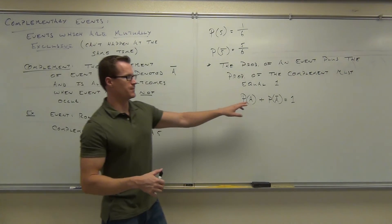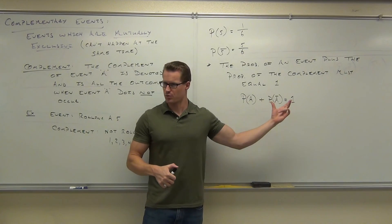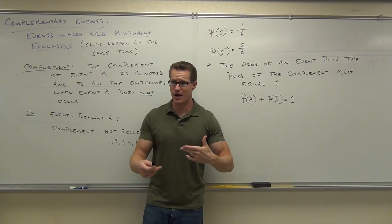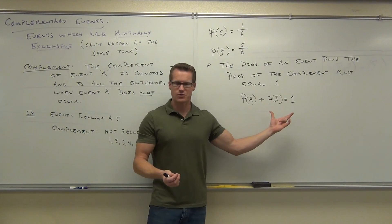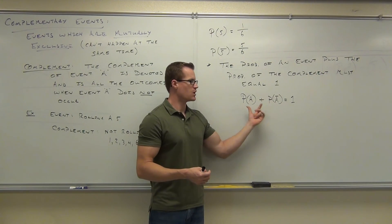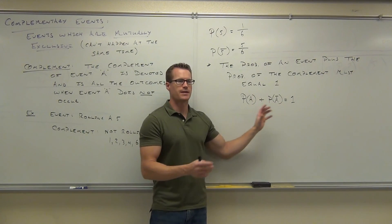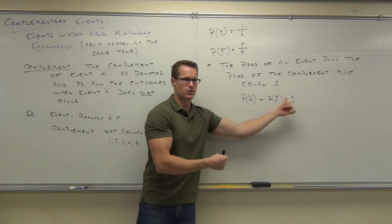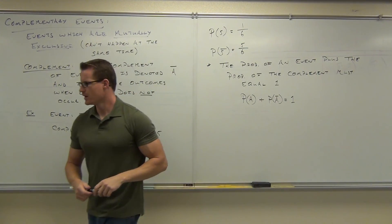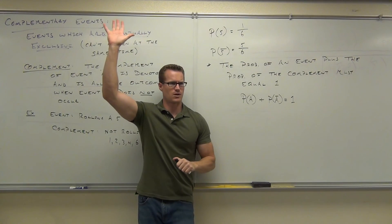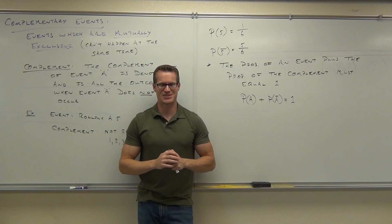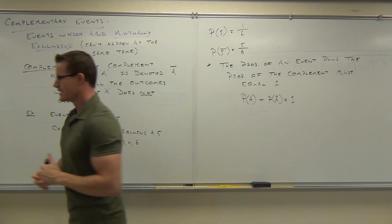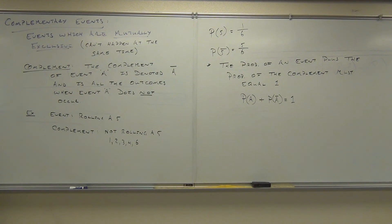We're going to revisit this towards the latter part of Section 4.3 — this will come back. But if you understand it now, you're ahead of the game. If they're mutually exclusive, you have to be either here or here; you can't be anywhere else. So if you add those probabilities together, that accounts for everything — you have a 100% probability of being in that range. Do you feel good about Section 4.2? That takes care of 4.2; we're going to go ahead and start 4.3 now.